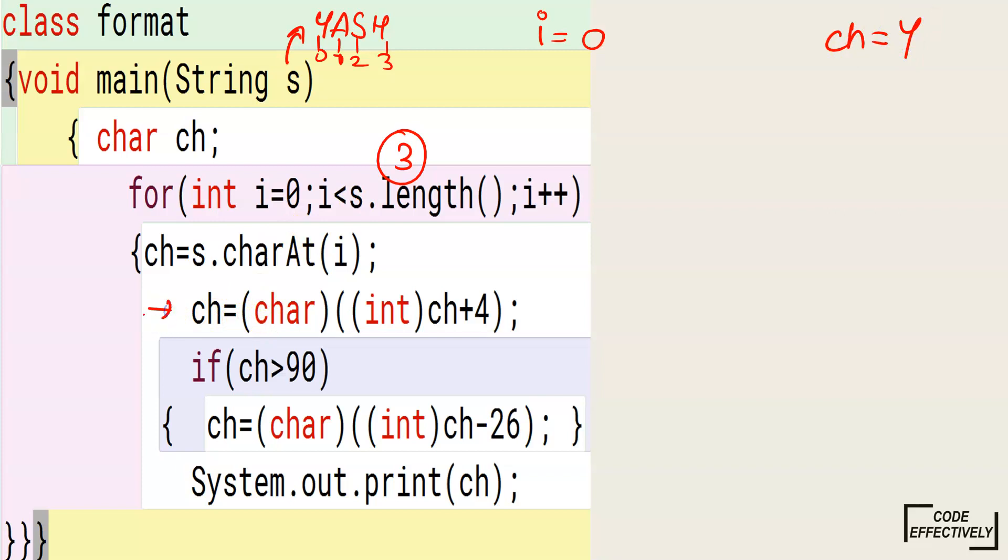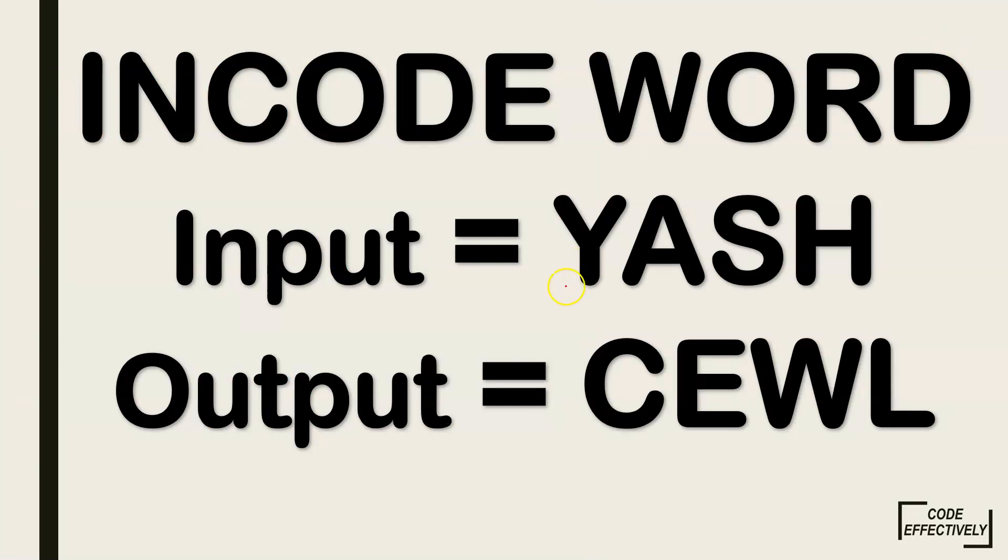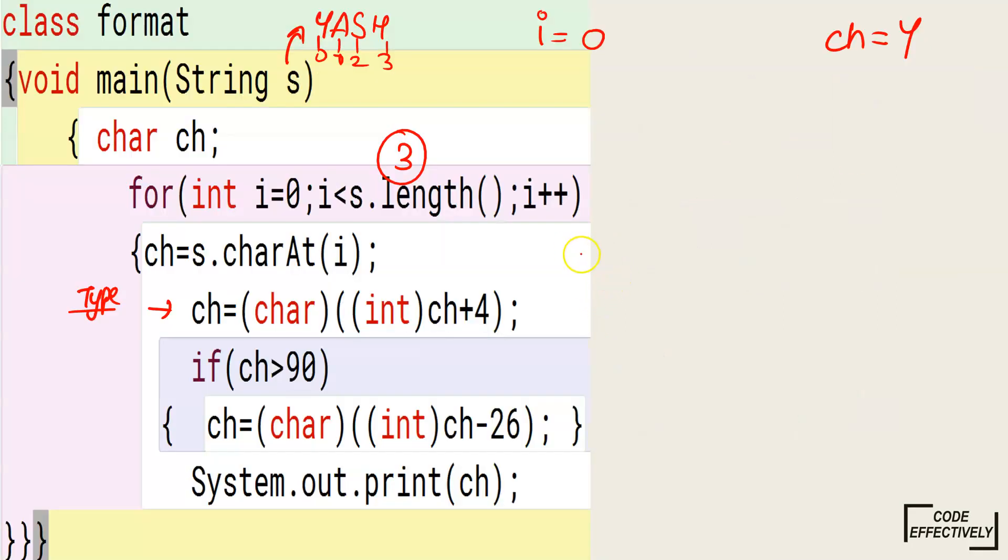Here is going to be a typecasting. What will happen in typecasting? We are converting the character first into an integer type. We will add 4 numbers to it because you have seen the difference of these words is 4. And then again we will convert it back to the character. Now let's see. What is the ASCII value of ch? It's Y. And if you go to Y's ASCII value, you will see it's 65 to 90.